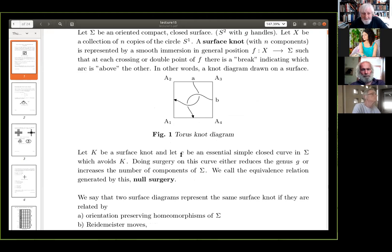Okay, let K be a surface knot, and let C be an essential, simple closed curve in sigma, which avoids K. So, we can do surgery on this curve, and in other words, we cut along the curve, and then that gives us two raw circles, which are in the boundary now, the surface now has boundary, we fill in these with discs to make another closed surface, and this either reduces the genus G, or increases the number of components of the surface. We call the equivalence relation generated by this null surgery.